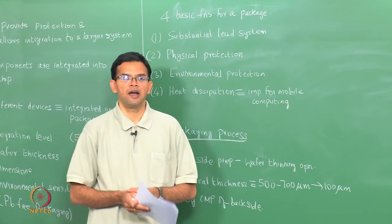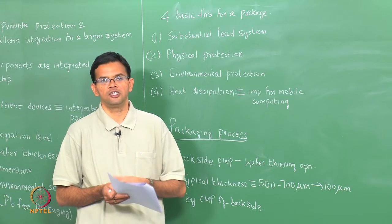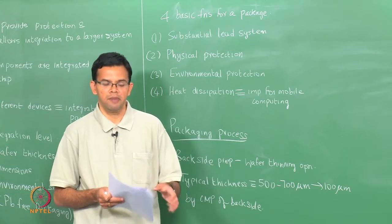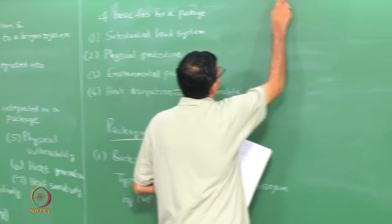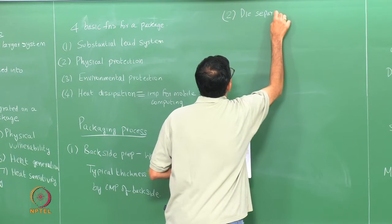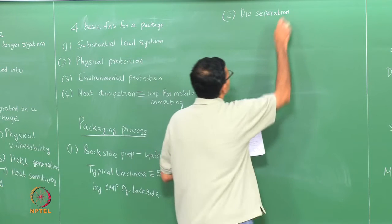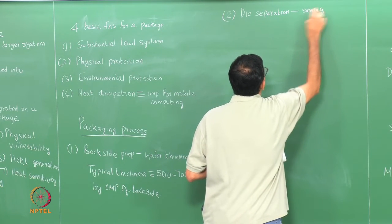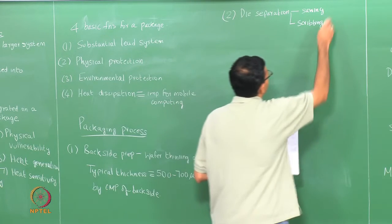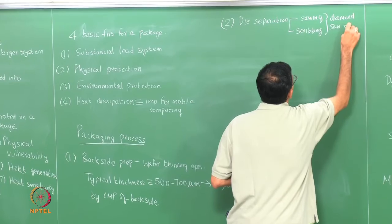The original thickness of 500 to 700 microns is essential because during fabrication the wafers go through a whole series of processes, so they should be mechanically robust — which is why they are originally thick — but when it comes to packaging, the thinner the better. After backside preparation, the next step is die separation. In this step the individual dies are separated from your wafer, typically by a sawing or scribing process using a diamond-based system — a diamond saw or scribe.